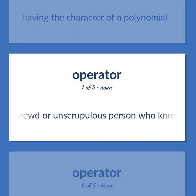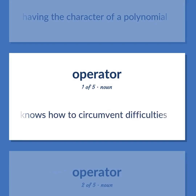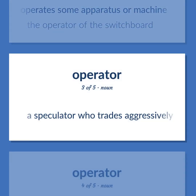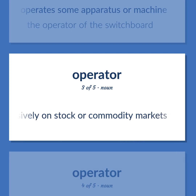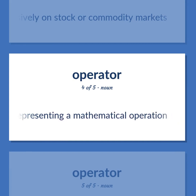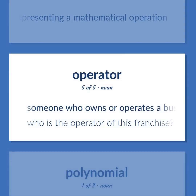Operator. A shrewd or unscrupulous person who knows how to circumvent difficulties. An agent that operates some apparatus or machine. The operator of the switchboard. A speculator who trades aggressively on stock or commodity markets. Mathematics: A symbol or function representing a mathematical operation. Someone who owns or operates a business. Who is the operator of this franchise?